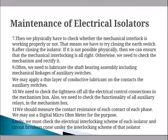For the auxiliary switches, check the tightness of all electrical control connections in the mechanism box. Also check the functionality of all auxiliary relays in the mechanism box. Measure the contact resistance of each contact of each phase using a digital ohmmeter. Finally, check the electrical interlocking scheme of each isolator and circuit breaker that falls under the interlocking scheme.